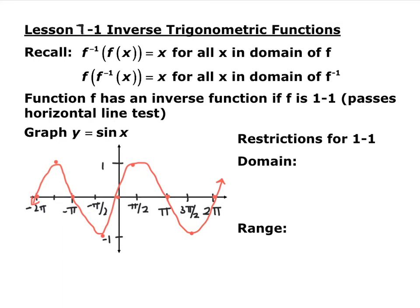Section 7.1 is inverse trig functions. Back in chapter 5, we introduced the idea of inverse functions. You have a function and its inverse, denoted f to the negative 1. If you take the composite either direction — f inverse composed with f, or f composed with f inverse — you end up with x for all x's in the domain of the inside function.